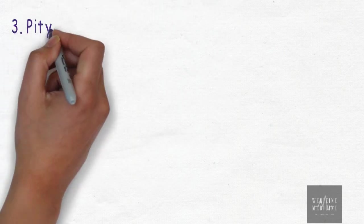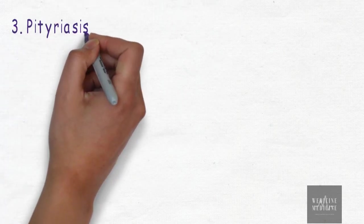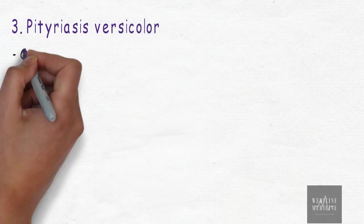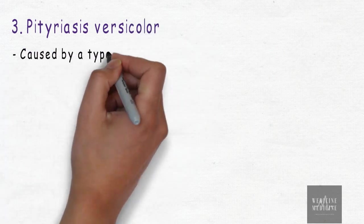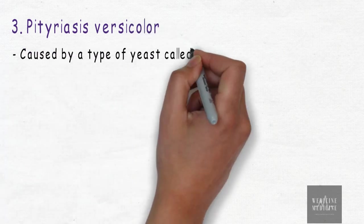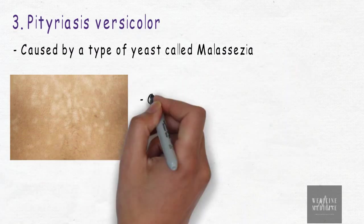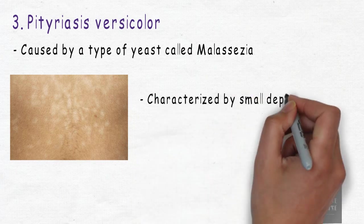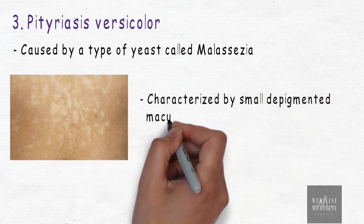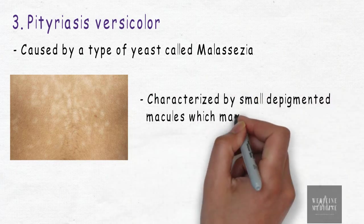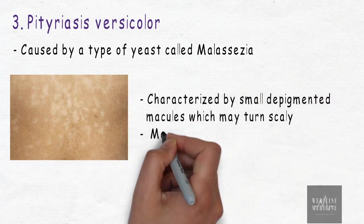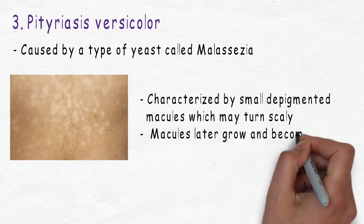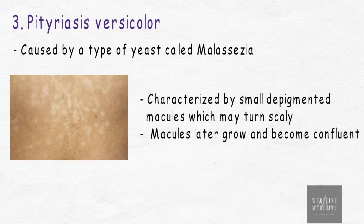Another disorder of hypopigmentation is pityriasis versicolor, which is caused by a type of fungus called Malassezia. This disorder is characterized by small depigmented macules which may turn scaly. The macules may later grow and become confluent to form a larger patch.